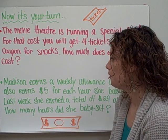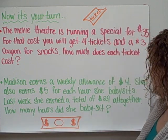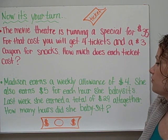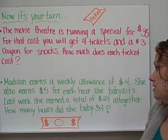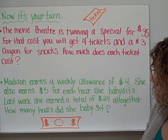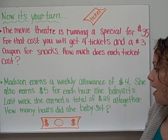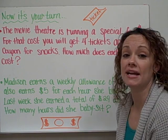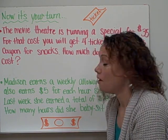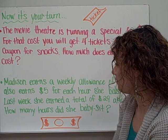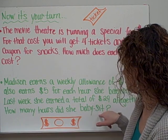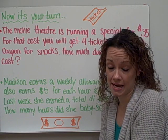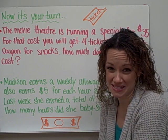And your second example: Madison earns a weekly allowance of $4. She also earns $5 for each hour she babysits. Last week she earned a total of $29 altogether. How many hours did she babysit? Again, try to create an algebraic expression that shows your problem and solve the final question to the best of your ability. If you need to, make sure you draw pictures or use any other strategies that might help you solve these.